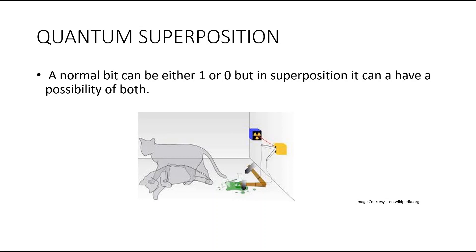Because the existence of a cat that is both dead and alive at the same time is absurd and does not happen in the real world, this thought experiment shows that wave function collapses are not just driven by conscious observers.